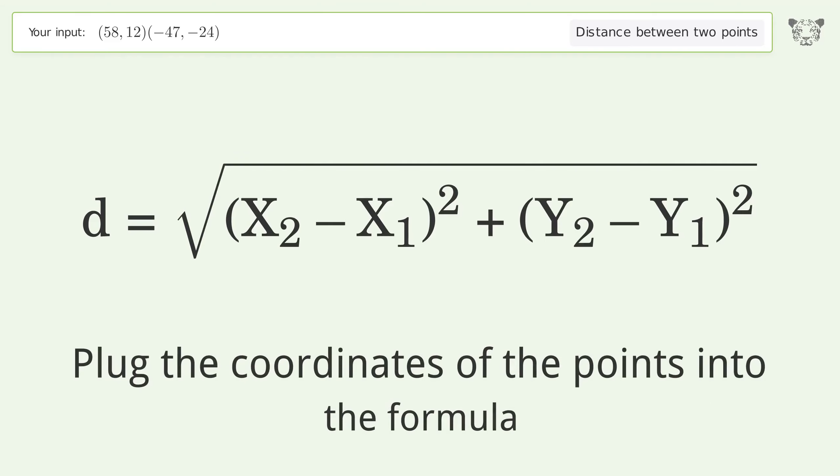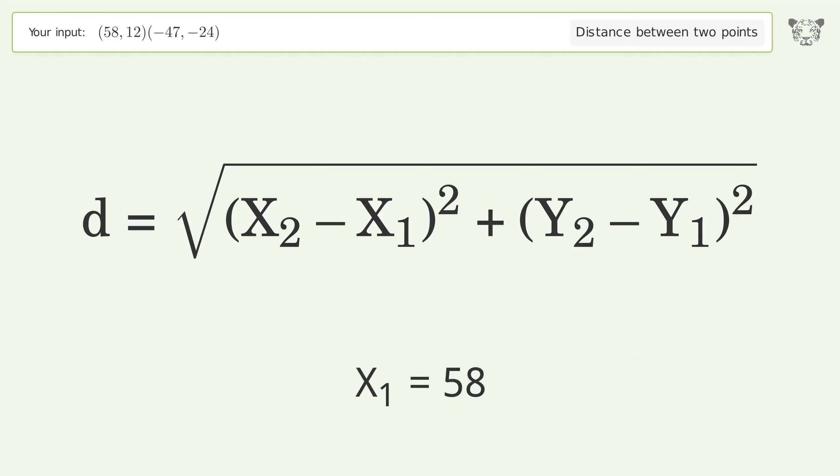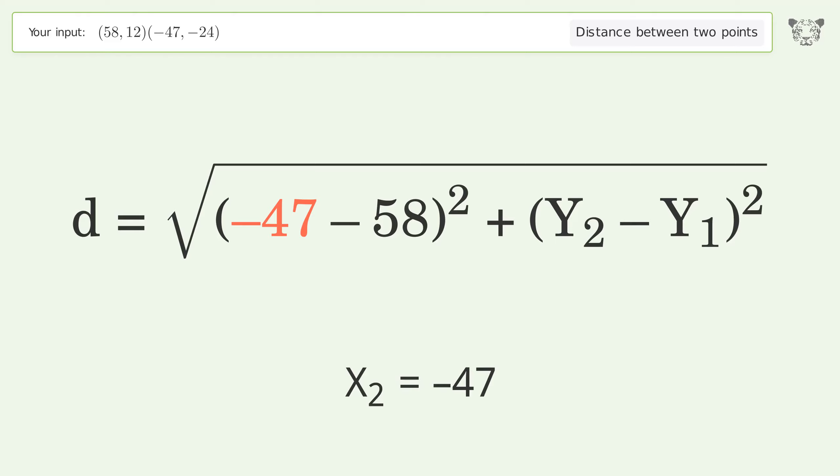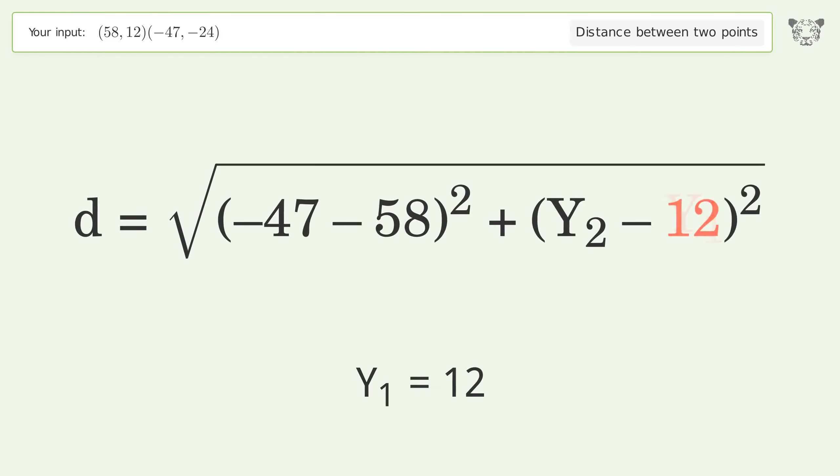Plug the coordinates of the points into the formula. x1 equals 58, x2 equals negative 47, y1 equals 12, y2 equals negative 24.